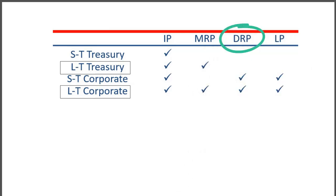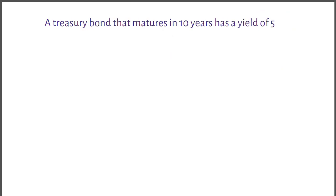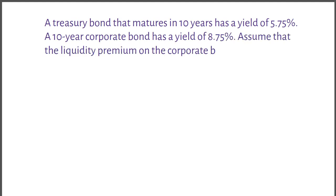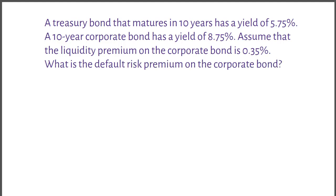Let us take an example. A treasury bond that matures in 10 years has a yield of 5.75%. A 10-year corporate bond has a yield of 8.75%. Assume that the liquidity premium on the corporate bond is 0.35%. What is the default risk premium on the corporate bond?